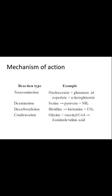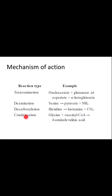The reaction types for the mechanism of action of vitamin B6 include: transamination — the transfer of an amino group, for example oxaloacetate and glutamate are converted into aspartate and alpha-ketoglutarate, a reversible reaction. Deamination involves taking away the amino group; for example, serine is converted into pyruvate with dissociation of the amino group.